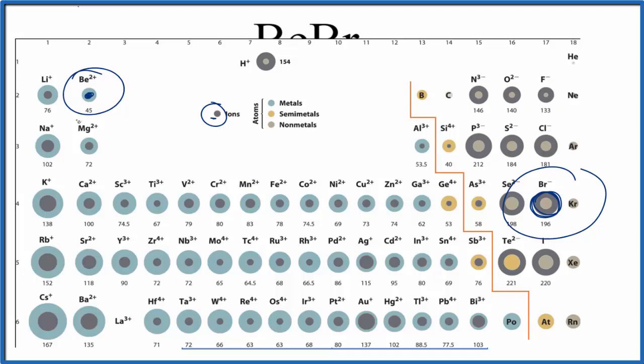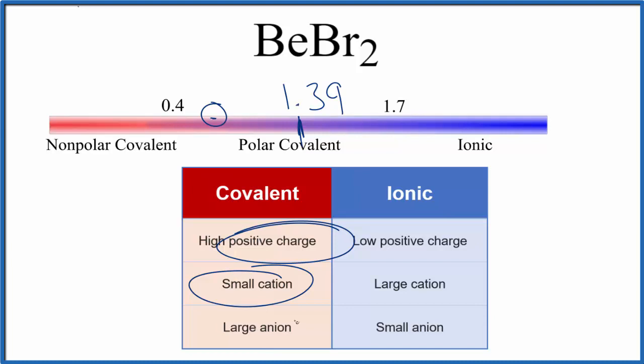So we have a small cation, a large anion. Small cation, large anion. That really supports the idea that BeBr₂ is a covalent compound.